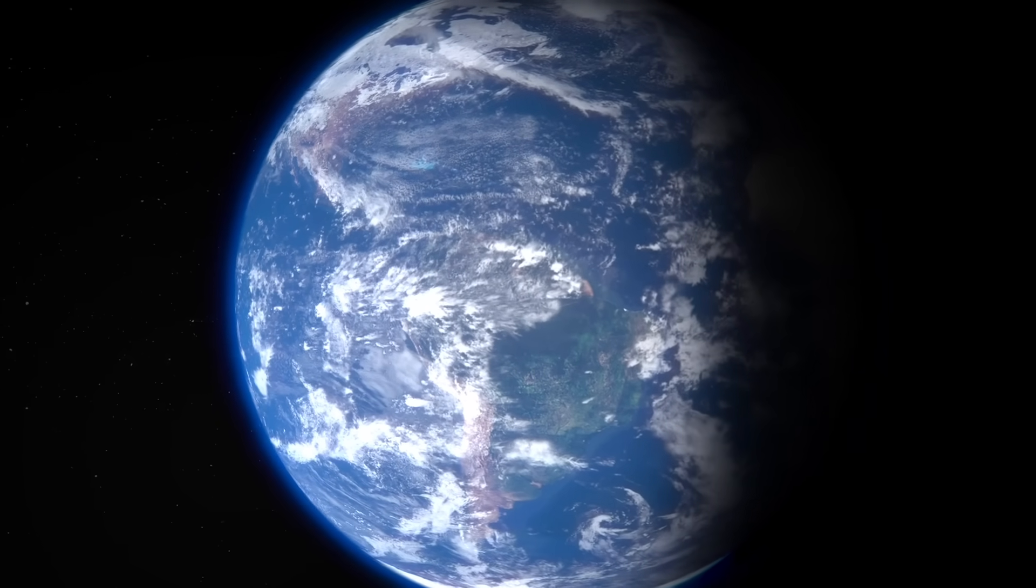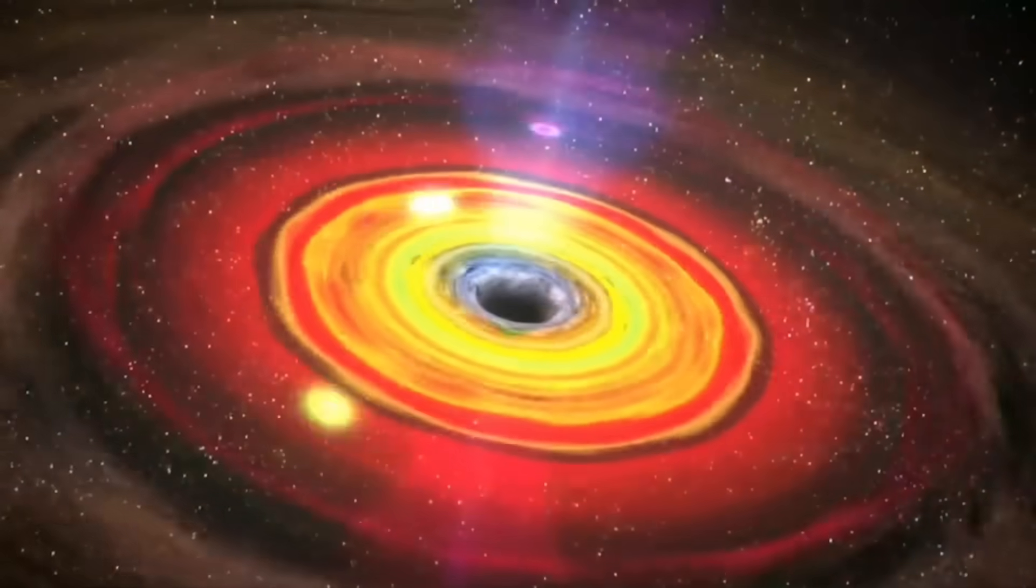But there's something else Voyager discovered. Something that challenges everything we thought about the structure of our cosmic neighborhood. Scientists expected the magnetic field to flip dramatically at the heliopause. Inside our solar system, magnetic field lines run in one direction. Shaped by our sun. Outside, in interstellar space, they should point completely differently. Shaped by the galactic magnetic field.